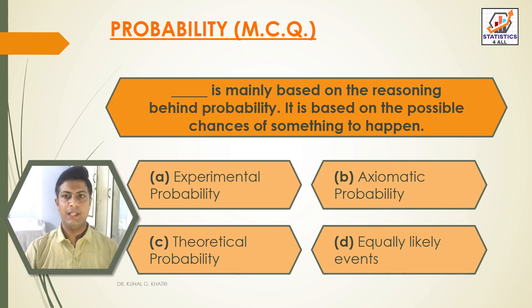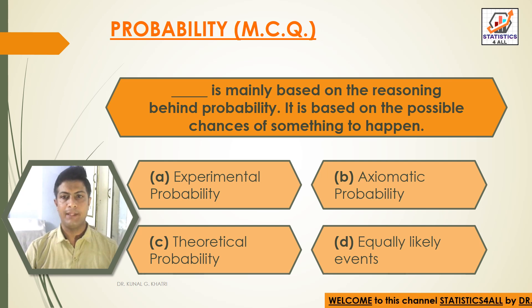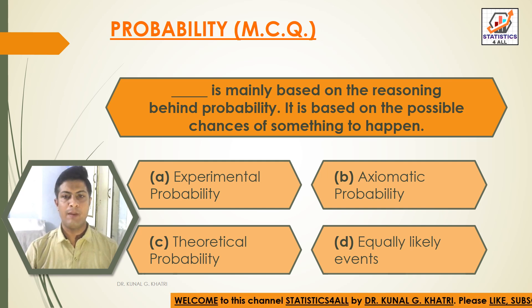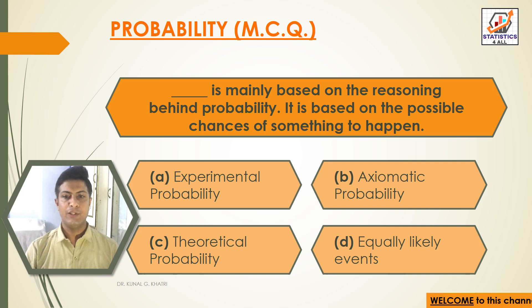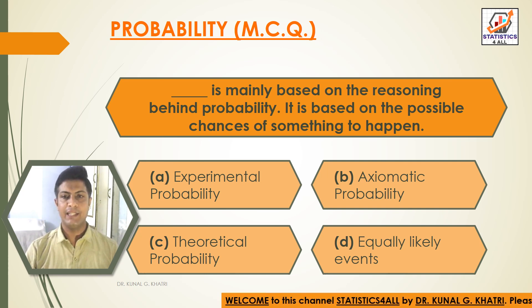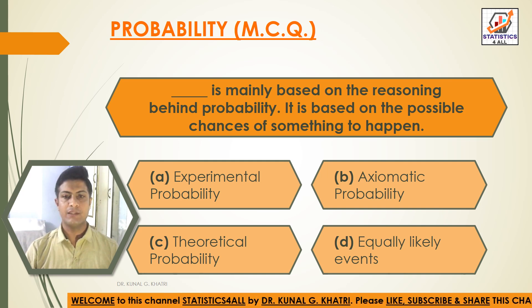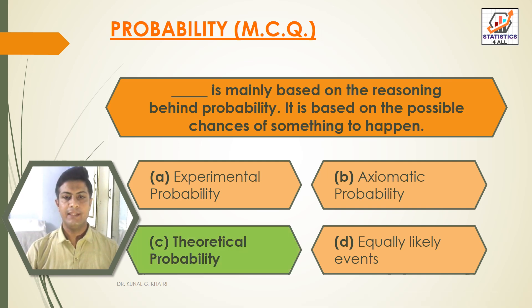Question 1: Dash is mainly based on the reasoning behind probability. It is based on the possible chances of something to happen. Option A: Experimental probability. Option B: Axiomatic probability. Option C: Theoretical probability. Option D: Equally likely events. Answer: Option C — Theoretical probability is mainly based on the reasoning behind probability; it is based on the possible chances of something to happen.